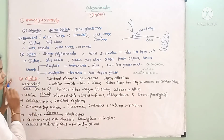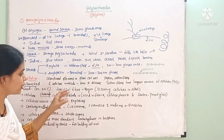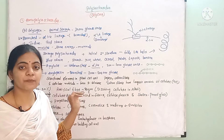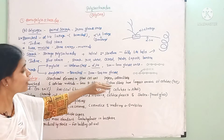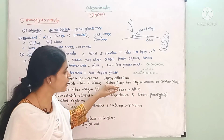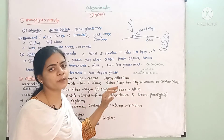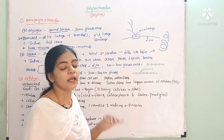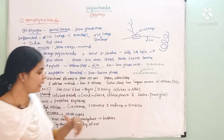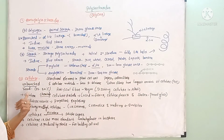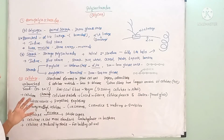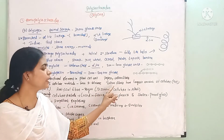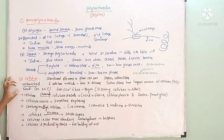Cellulose is in unbranched form with no branching. Each cellulose molecule contains nearly 6000 beta glucose units. The largest sources of cellulose in the world are cotton fibers and wood.